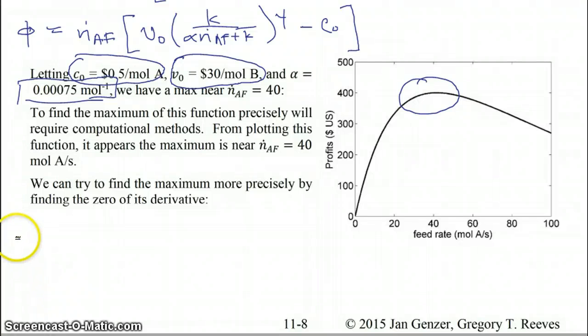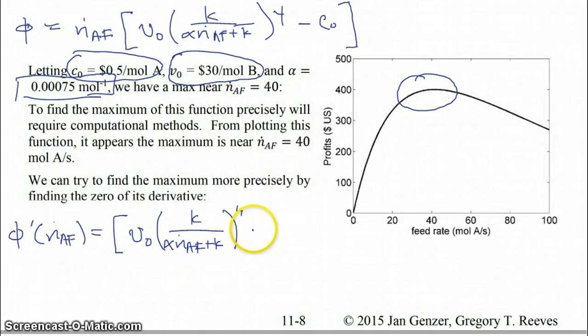So we're going to go ahead and calculate this derivative. So then we have phi prime as a function of N dot A feed. And we're going to have to employ the product rule, so it's the derivative of the first times the second. So the second would be V0 times that quotient there minus C0. And then you have the second part of the product rule plus the first times the derivative of the second.